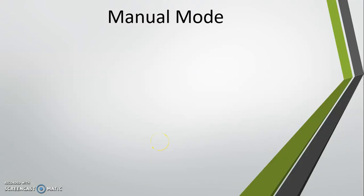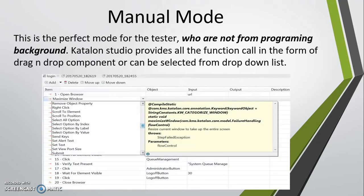In this video I am going to discuss the second type of mode provided by Katalon Studio — the manual mode. This is a very important mode because using it, testers can write automation scripts without having knowledge of a programming language. Katalon Studio provides all the functions and API calls in the form of a drag-and-drop feature, which testers can directly drag and drop into their test script.